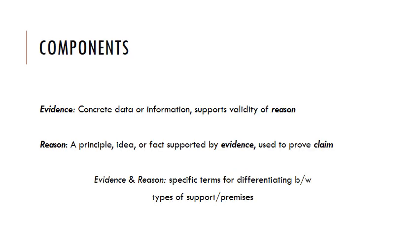When working with more complex arguments, it's useful to differentiate between the types of support you use — specifically between evidence and reasons. Evidence, in this technical sense, means concrete data or information: factual ideas that are observable or provable, that support the validity of your reasons. The reason is the principle, idea, or larger fact that is supported by evidence and used to prove your claim or conclusion. So this is a case where one premise proves another premise, which proves your conclusion.